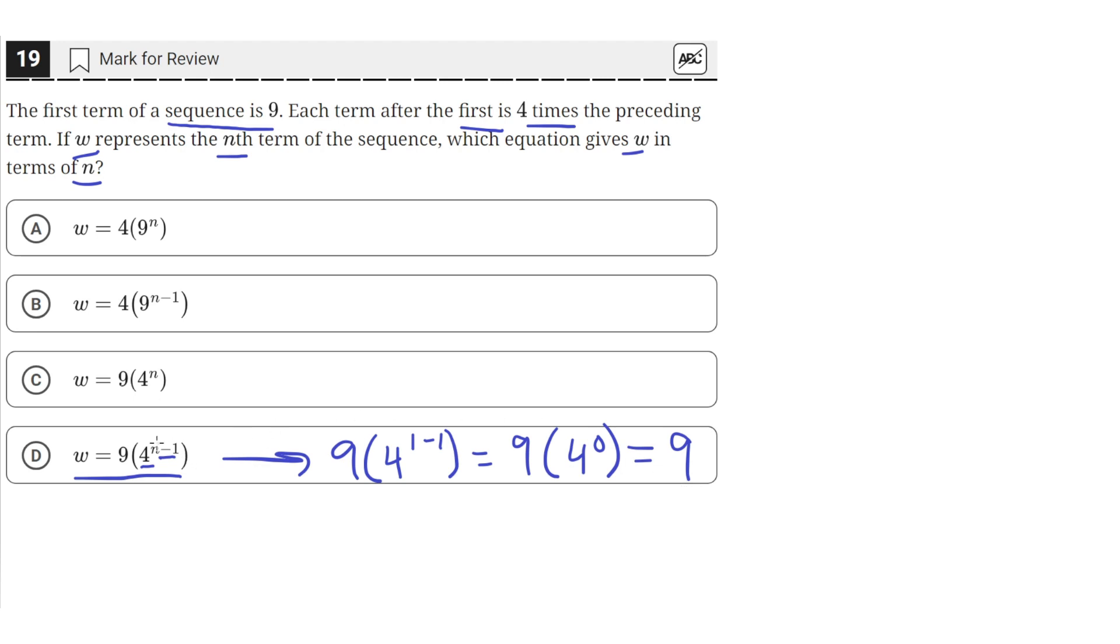And that's why we started at n minus one as the power, because the first term in the sequence is at an n value of one, and that term needs to be nine.